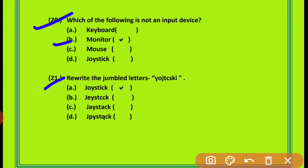Question 21: Rewrite the jumbled letters. आपको यहाँ spelling दी गई है जिसमें letters आगे पीछे किये गए हैं, तो आपको इन्हें एक meaningful word में convert करना है। Option A, joystick — J-O-Y-S-T-I-C-K — is correct.